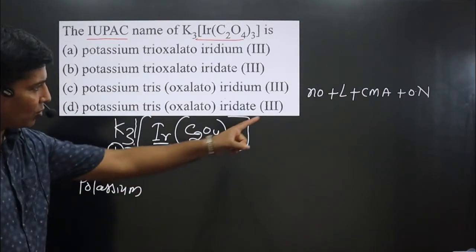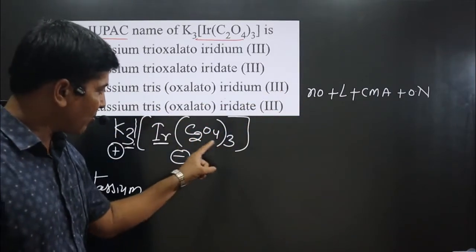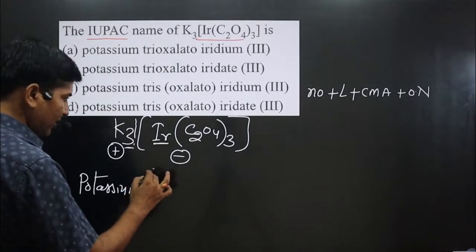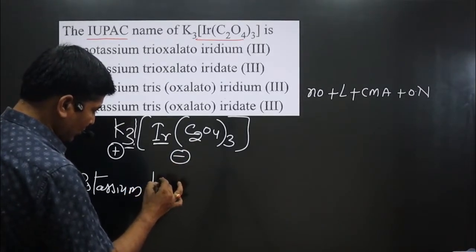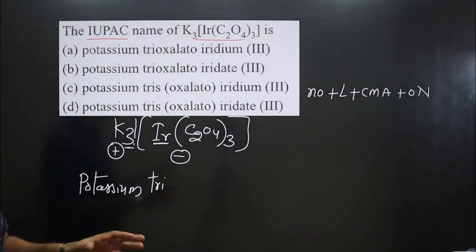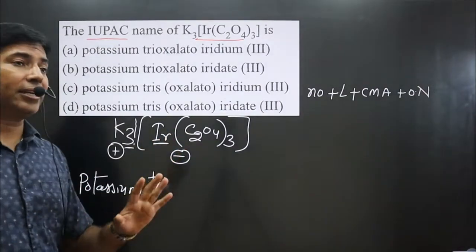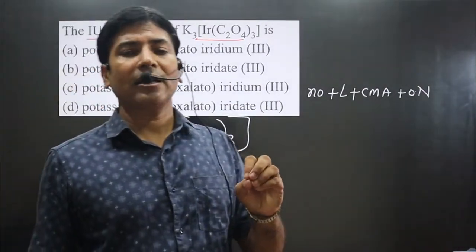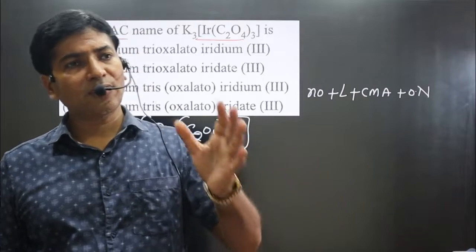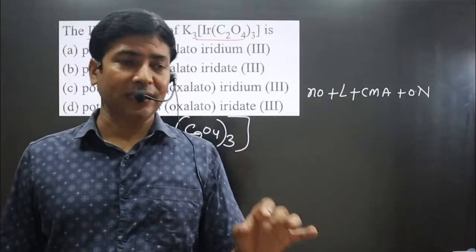Then we follow this order: number of ligands. How many are there? Three. Keep in mind, this is oxalate ion. I can write it as tris and I can write it as tri also. Oxalate ion—in case of oxalate ion, we can consider it as a unidentate ligand and we can consider it as a polydentate ligand.